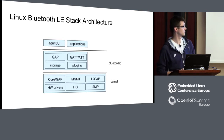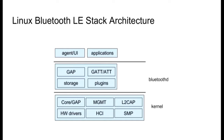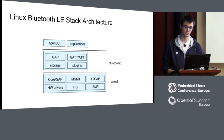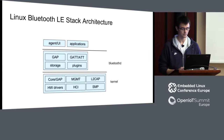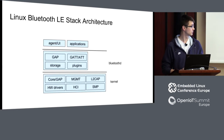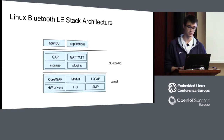How does the stack architecture look? It's basically split between kernel and user-space components. The kernel implements most of the GAP profiles — it handles scanning, connecting, pairing, and so on. It abstracts the hardware for you, so whatever chip you have, if you have a running driver, application layers don't need to care about whether it's USB, UART-based, or other connection type. The security manager is implemented inside the kernel, and it provides L2CAP sockets that user space can use.